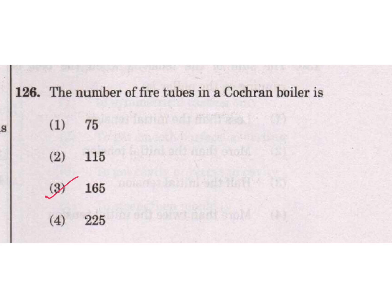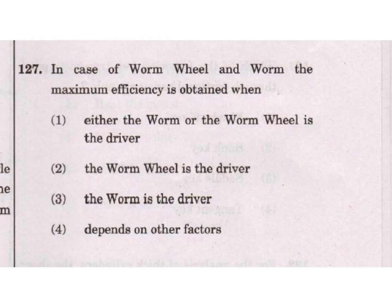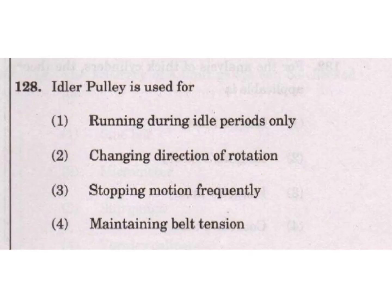In the case of a worm and worm wheel, the maximum efficiency is obtained when either the worm or the worm wheel is the driver — option 1 is the answer. Idler pulley is used for maintaining the belt tension — option 4 is the answer.